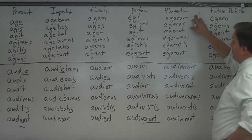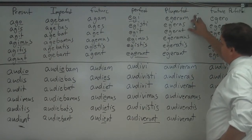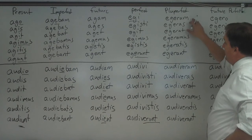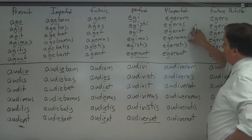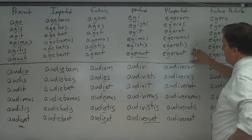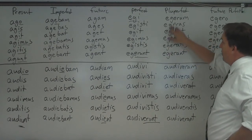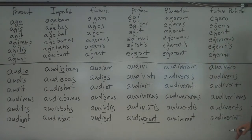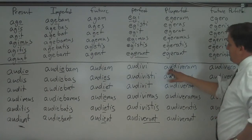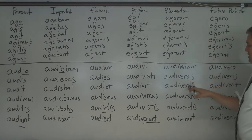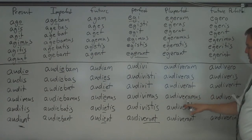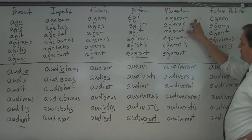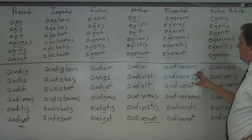Then we have the pluperfect. You take the imperfect 'eram' and combine it with the perfect stem. So: egeram, egeras, egerat. There is no I — the I has been dropped from the third principal part. Same thing for audio: audiveram, audiveras, audiverat.